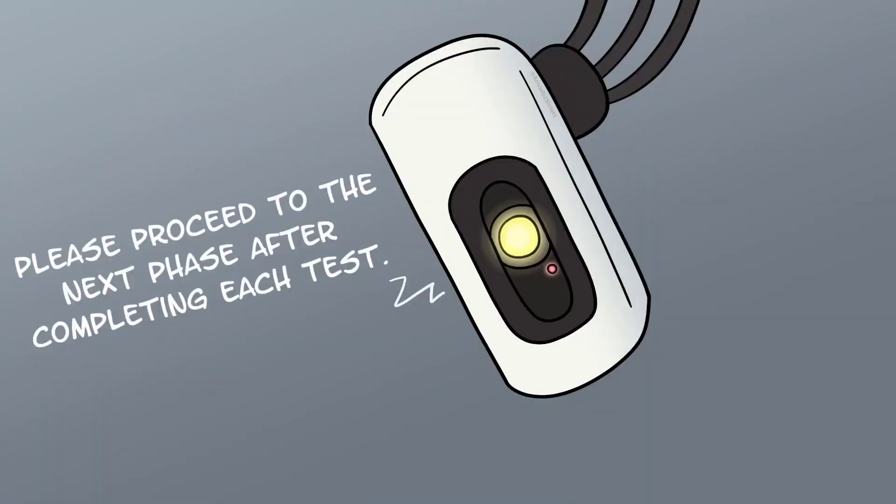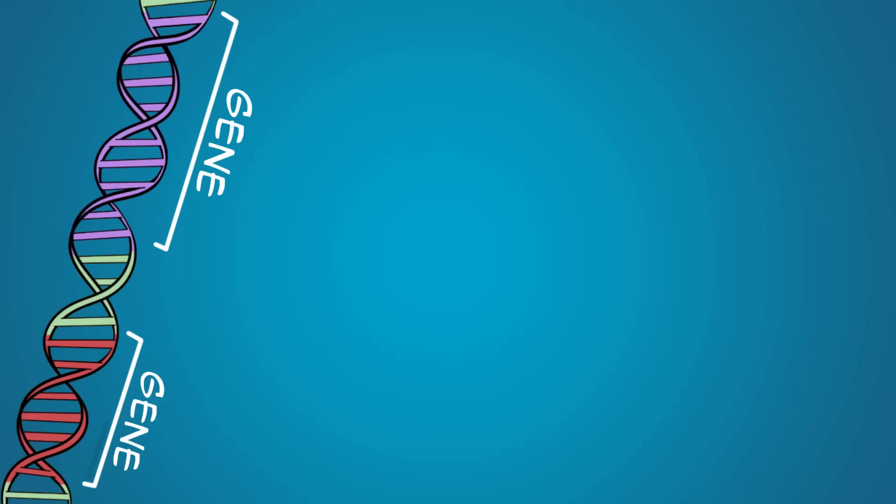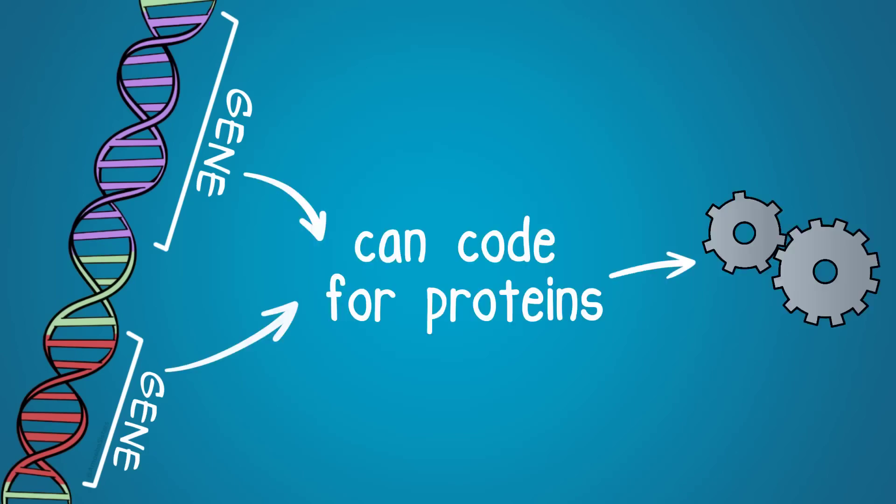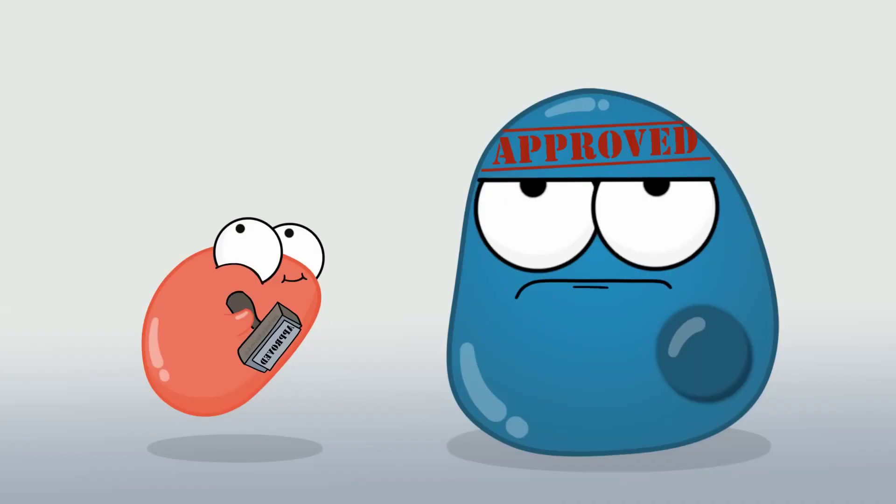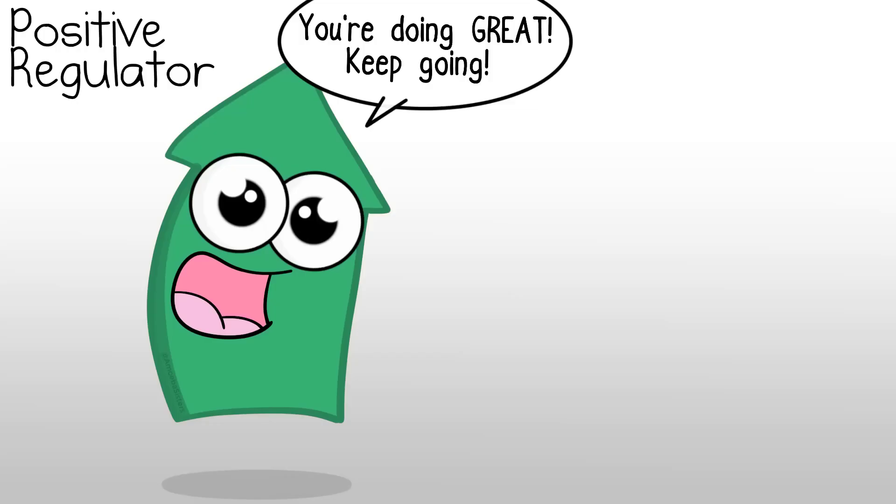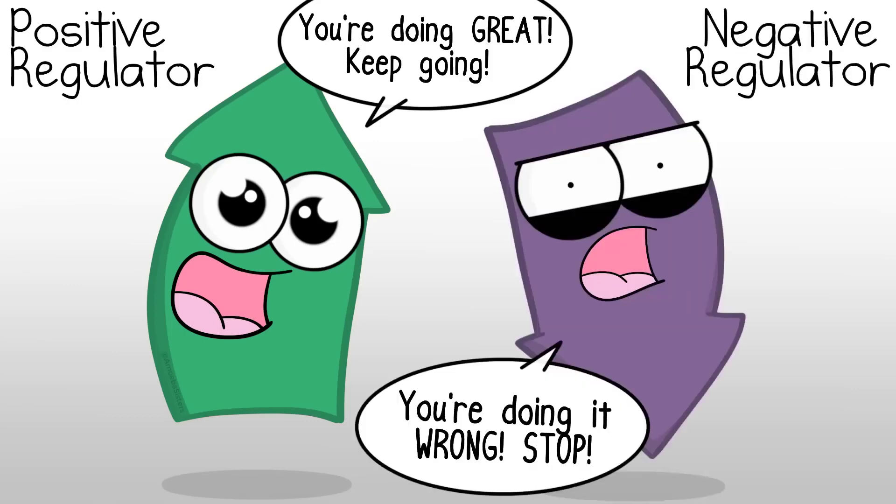So what is doing the regulating anyway? We've mentioned before that proteins are a big deal. Genes in your body can code for proteins that do an assortment of functions. And there are many proteins involved with regulating the cell cycle. Some of them are positive regulators because they allow moving forward in the cycle and some are negative regulators that might make things stop.